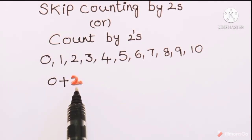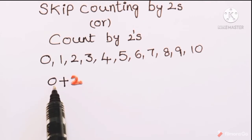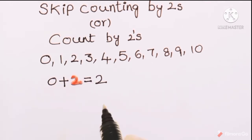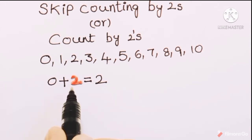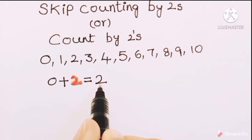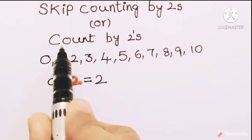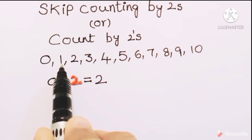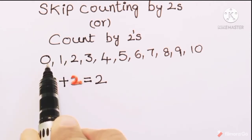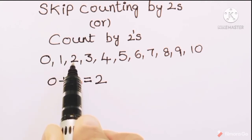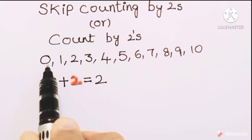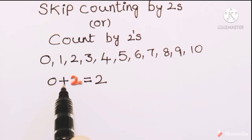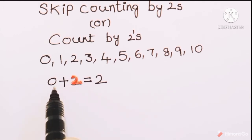So if we add the number 2 to the number 0, what do we get? It gives 2. So if we add 2 to 0 it will give 2. Since it is count by twos, we count two numbers after 0 — after 0 comes 1, then 2. So 0 plus 2 is 2.